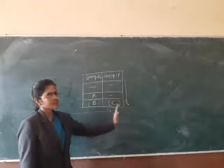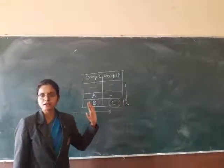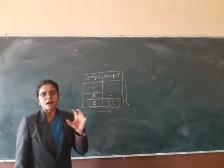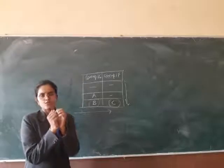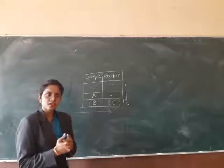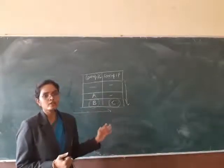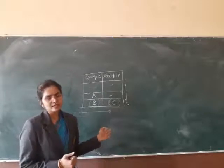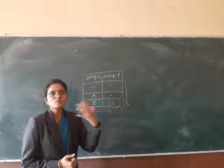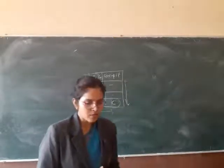जब हम across the period जाते हैं, nuclear charge बढ़ता जाता है क्योंकि number of protons बढ़ते जा रहे हैं। Nucleus अपनी तरफ ज़्यादा strongly electrons को pull करेगा, तो उनका size छोटा हो जाएगा। So as we move across a period, always the size decreases — because the nuclear charge increases and the electrons experience more force towards the nucleus।